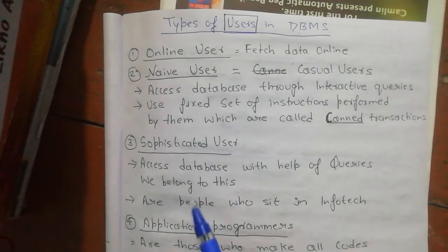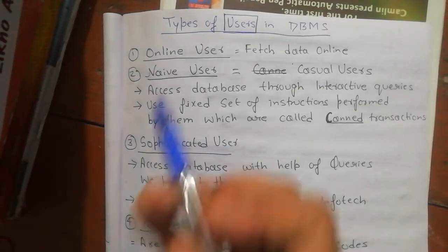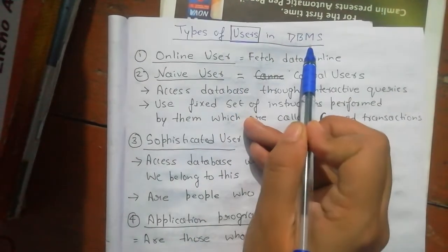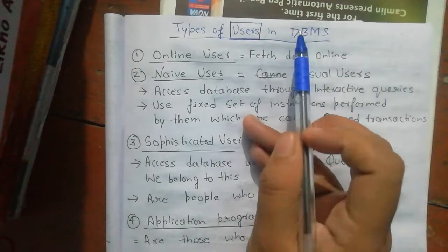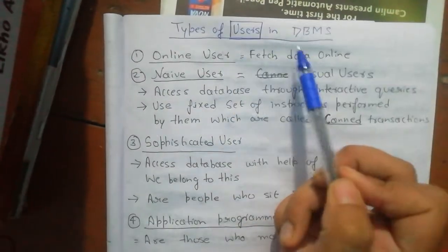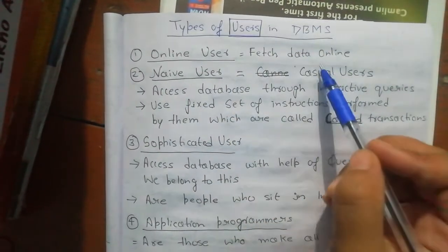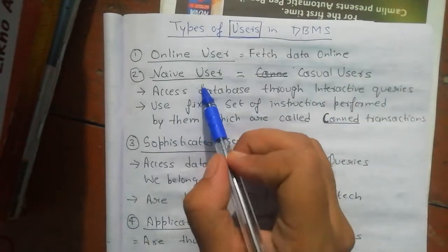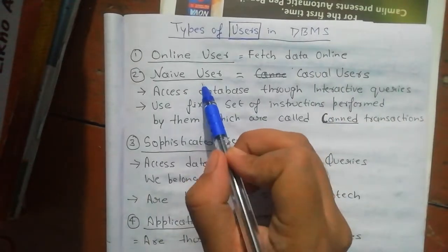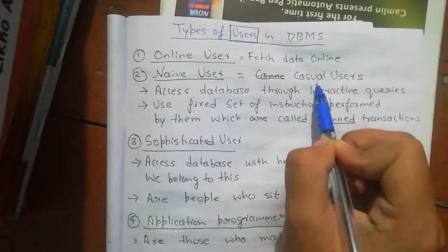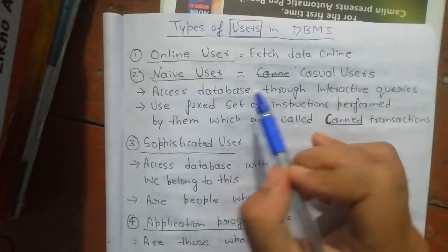In this video I will tell you about types of users in DBMS. We have different types of users, like online users who feed data online, and naive users — we can also call them casual users. They access the database through interactive queries.